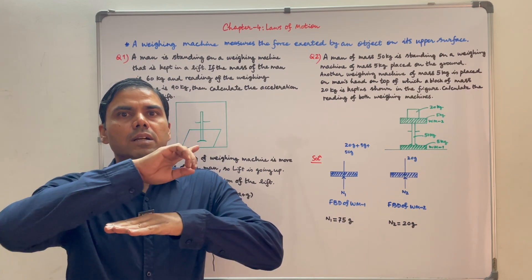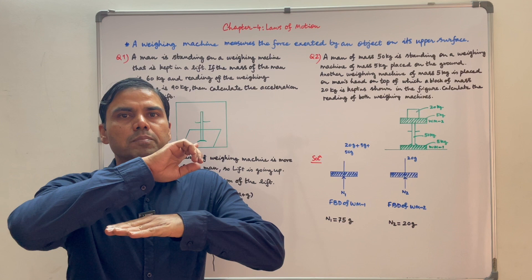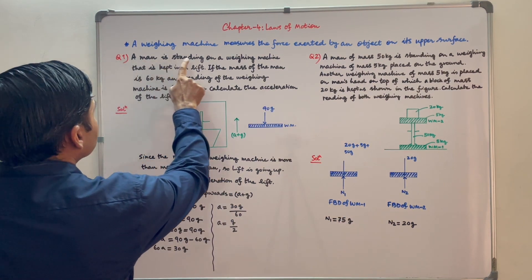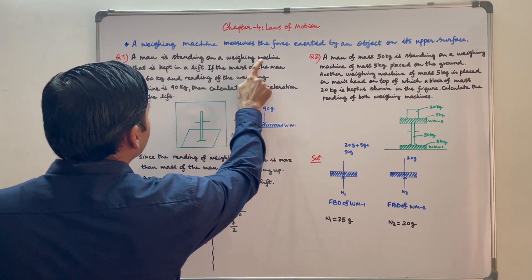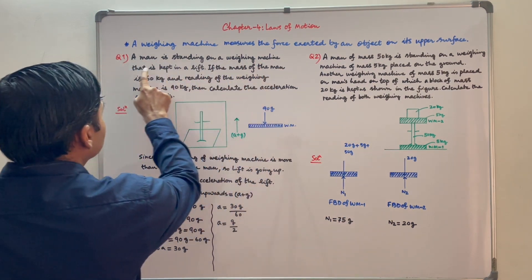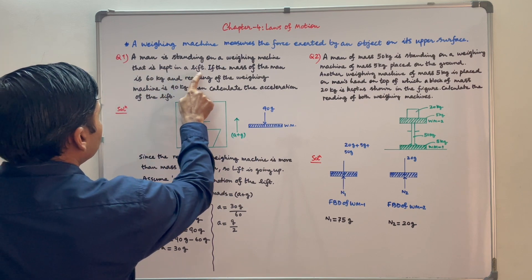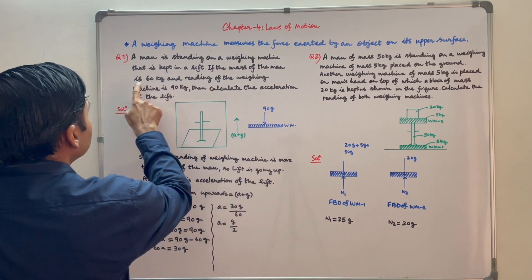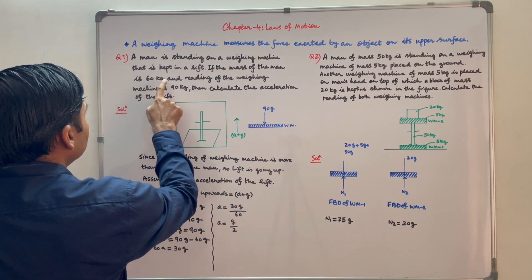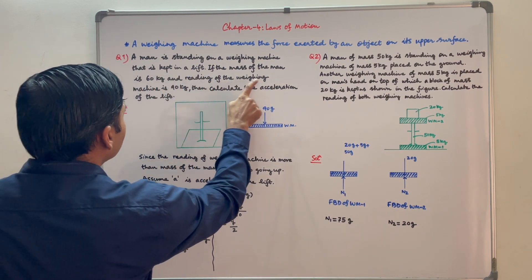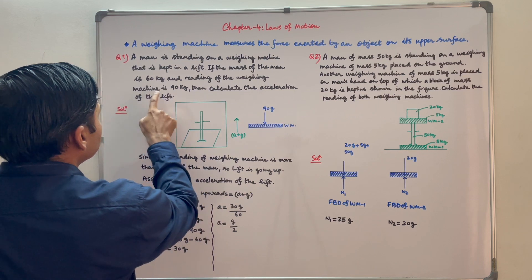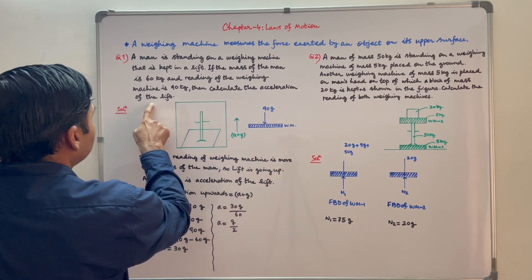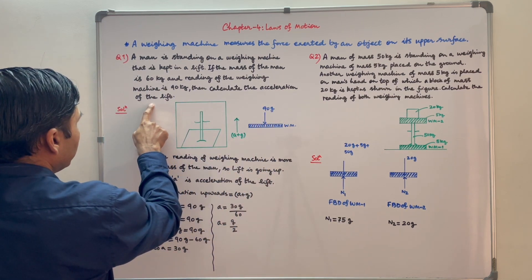A weighing machine measures the force exerted by an object on its upper surface. Let us see a couple of questions based on it. First question: a man is standing on a weighing machine that is kept in a lift. If the mass of the man is 60 kg and the reading of the weighing machine is 90 kg, then calculate the acceleration of the lift.